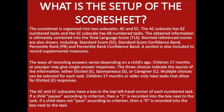The score sheet is organized into two subscales: AC and EC. The AC subscale has 62 numbered tasks and the EC subscale has 68 numbered tasks. The obtained information is ultimately combined into the total language score. Normed reference scores shown include standard score, standard score confidence band, percentile rank, and percentile rank confidence band. Children 17 months or younger may give single-answer responses indicating whether information was elicited, spontaneous, or from caregiver. Children 17 months or older only have tasks that allow for elicited responses.